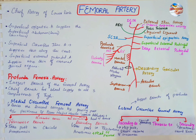The lateral circumflex femoral artery is the largest branch of the profunda femoris artery. It passes laterally between the anterior and posterior divisions of the femoral nerve and divides into ascending, transverse, and descending branches. The ascending and transverse branches take part in the cruciate anastomosis, formed on the posterior side of the femur below the greater trochanter, while the descending branch runs downward along the anterior border of vastus lateralis and takes part in the genicular anastomosis.